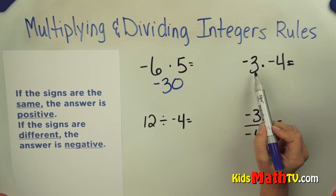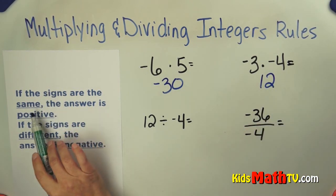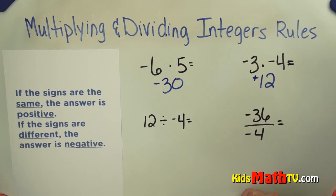Over here, if we multiply 3 times 4, we get 12. The signs are the same - they are both negative - so your answer is positive. You can put the positive sign there or leave it off either way.